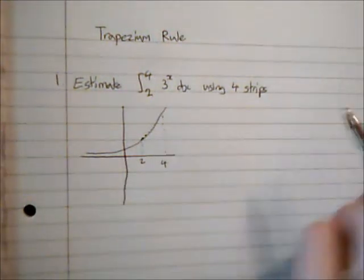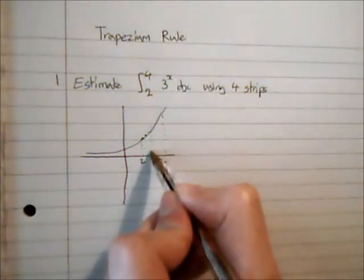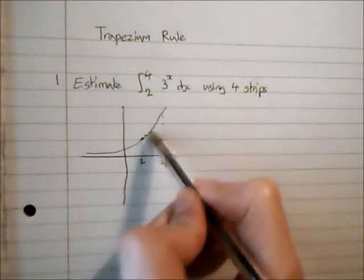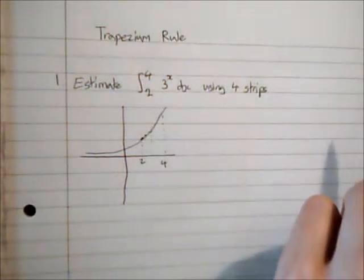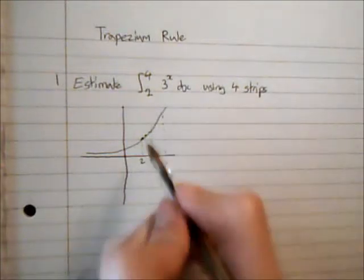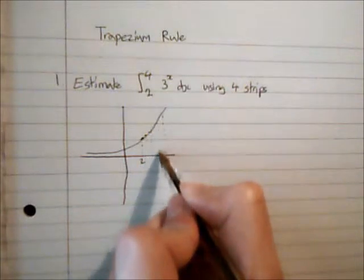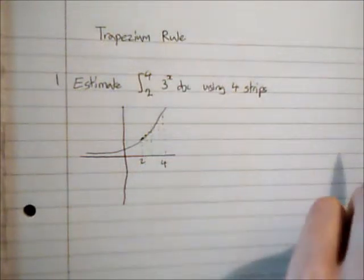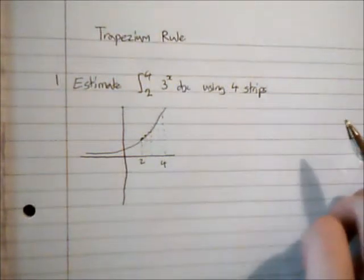Now if I was to split it into say two trapeziums, then the area that I've got in excess is going to be reduced. And if I have two more trapeziums, so I've got four trapeziums in total, then I've got an even more accurate answer. And if I could have an infinite number of trapeziums, I'm actually going to get the correct area.